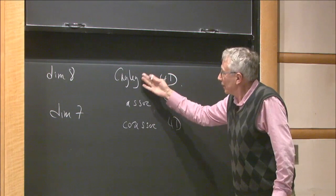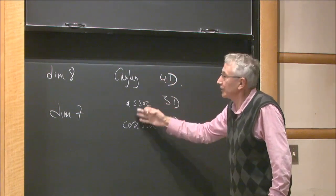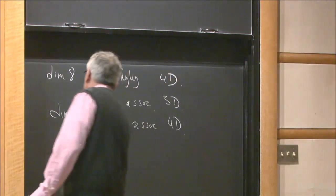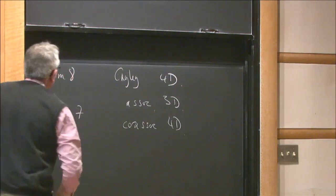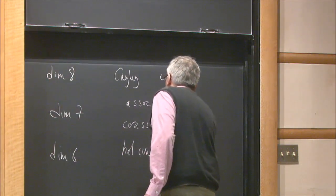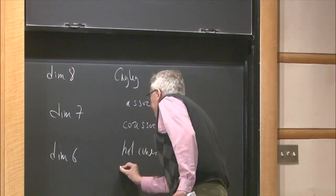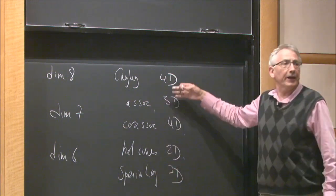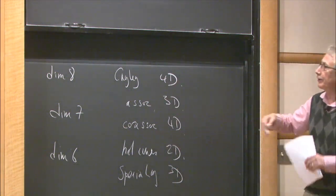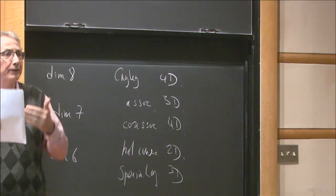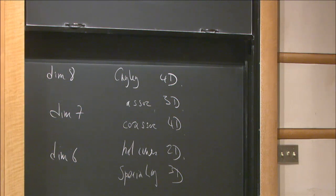We can come down to dimension 6 where things are more familiar. We get holomorphic curves — 2-dimensional — and special Lagrangian submanifolds — 3-dimensional — which fit into the pattern in the same way. If we take the product of a holomorphic curve with R, then we get an associative submanifold of our cylinder and so forth.